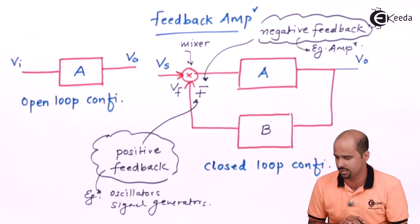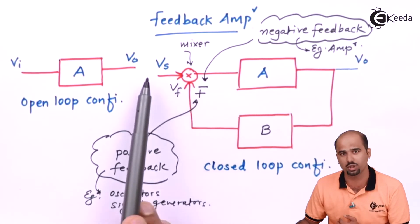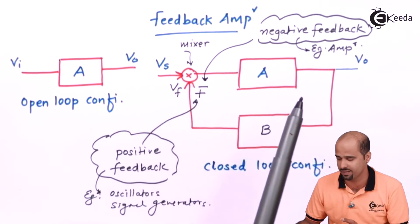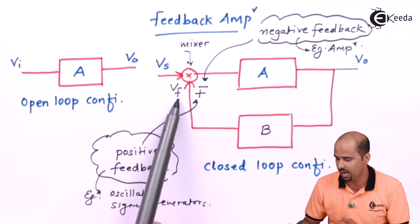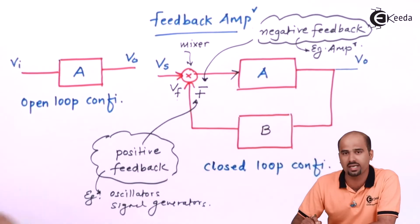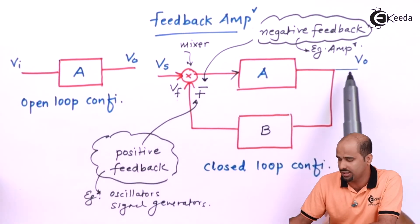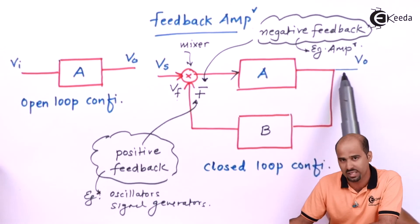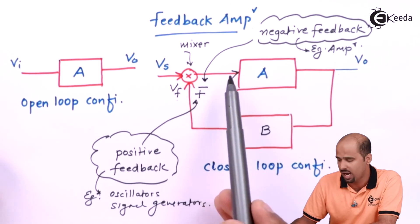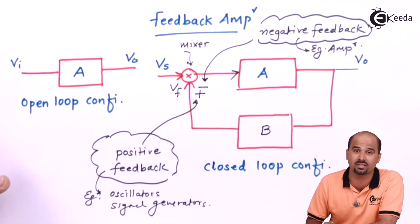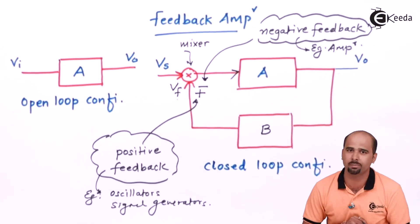When I add the source signal with the feedback signal it is negative feedback; when Vs is subtracted from Vf it is positive feedback. Whatever signal is obtained at the mixer output is called the error signal. If Vs is not equal to or proportionally scaled with Vo, then an error signal is generated, and depending on that error signal, the amplifier is designed to produce the correct output. That is the basic aim of the feedback amplifier.